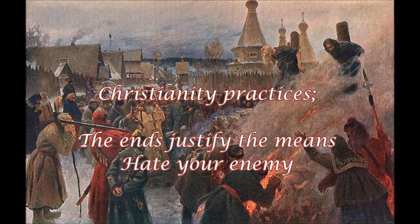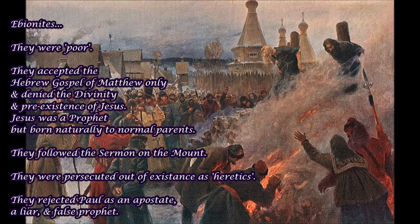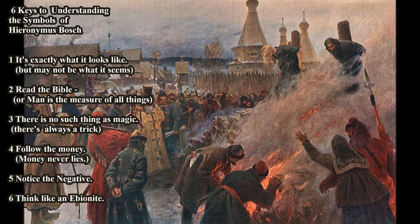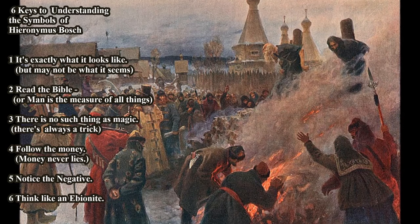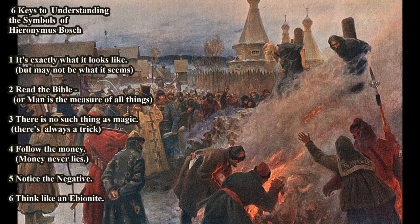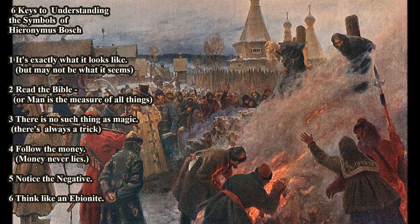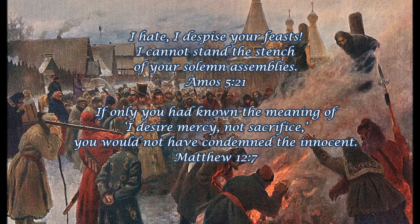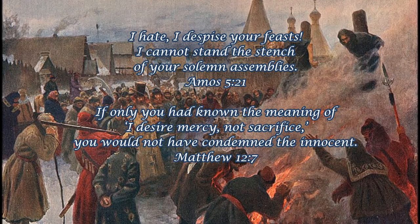They hated the Church for their religious hypocrisy, for exchanging treasure in heaven for treasure on earth, and most importantly, they rejected Paul as an apostate, the great liar, and a false prophet. And so now you have a sixth key for understanding the symbols of Hieronymus Bosch: think like an Ebionite. That means you reject the teachings of Paul, you reject his Church, and you do not accept the Bible as the Word of God but approach it with great skepticism because you do not believe in magic. You go to the Bible to learn about Jesus, but you also reject large slices of it when it deals with magic. And the great corrupting factor is money. Hieronymus Bosch would want you to remember all the witches, homosexuals, Jews, and heretics that died at the hands of these religious hypocrites.